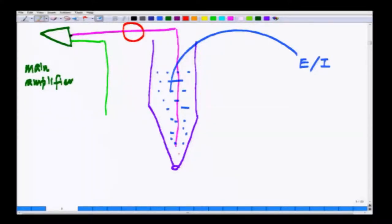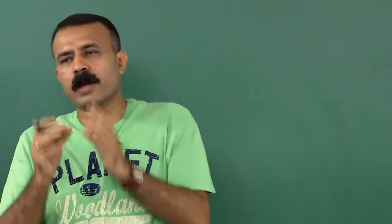With this setup, let us assume to start with that we fill the electrode with intracellular solution. This electrode is fitted on a micro manipulator.